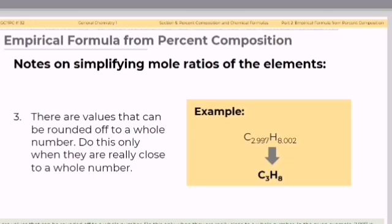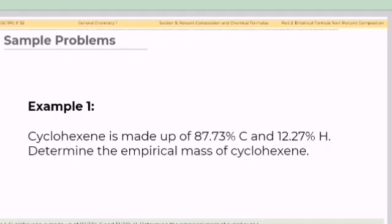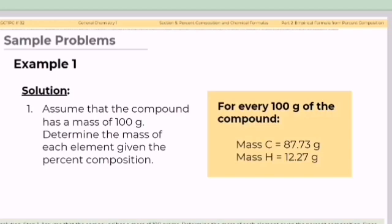The formula can be rewritten as C3H8. Let's have example number one. Cyclohexane is made up of 87.73% carbon and 12.27% hydrogen. Determine the empirical formula of cyclohexane. For the solution, step 1: assume that the compound has a mass of 100 grams. The masses of the elements present in 100 grams are 87.73 grams of carbon and 12.27 grams of hydrogen.